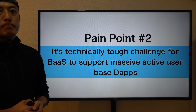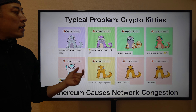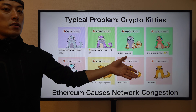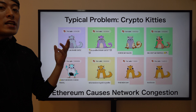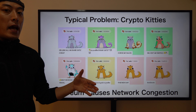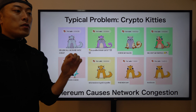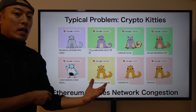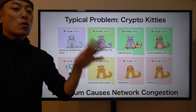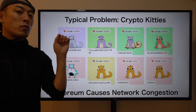Pain point number two: it's technically a tough challenge for blockchains to support massive active user-based apps. A typical example is CryptoKitties — a casual game where you can grow and trade cute virtual cats, like a crypto version of Pokémon. It got huge popularity in the blockchain gaming space. This game actually caused network congestion on Ethereum, because miners prioritized transactions with higher fees from CryptoKitties players.